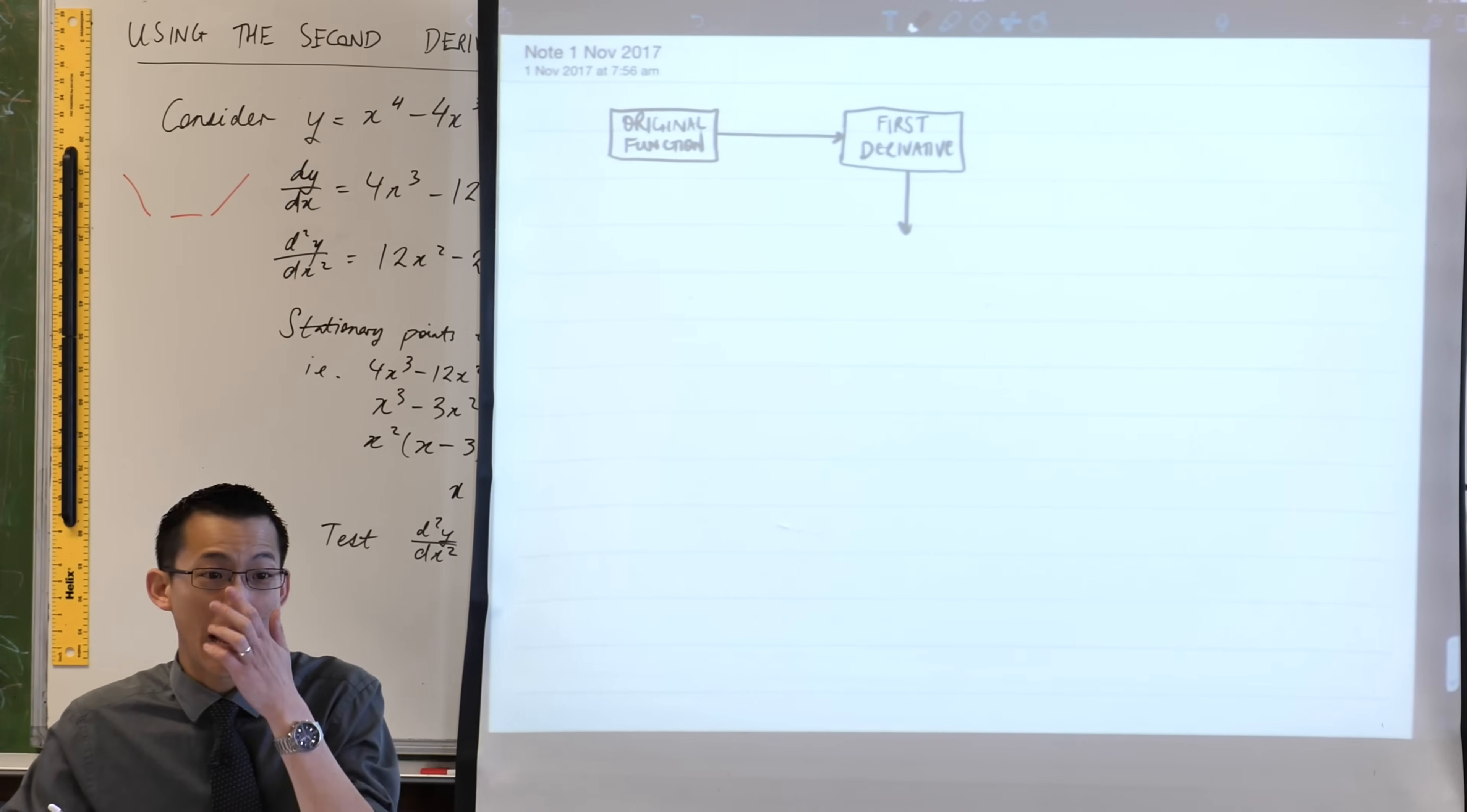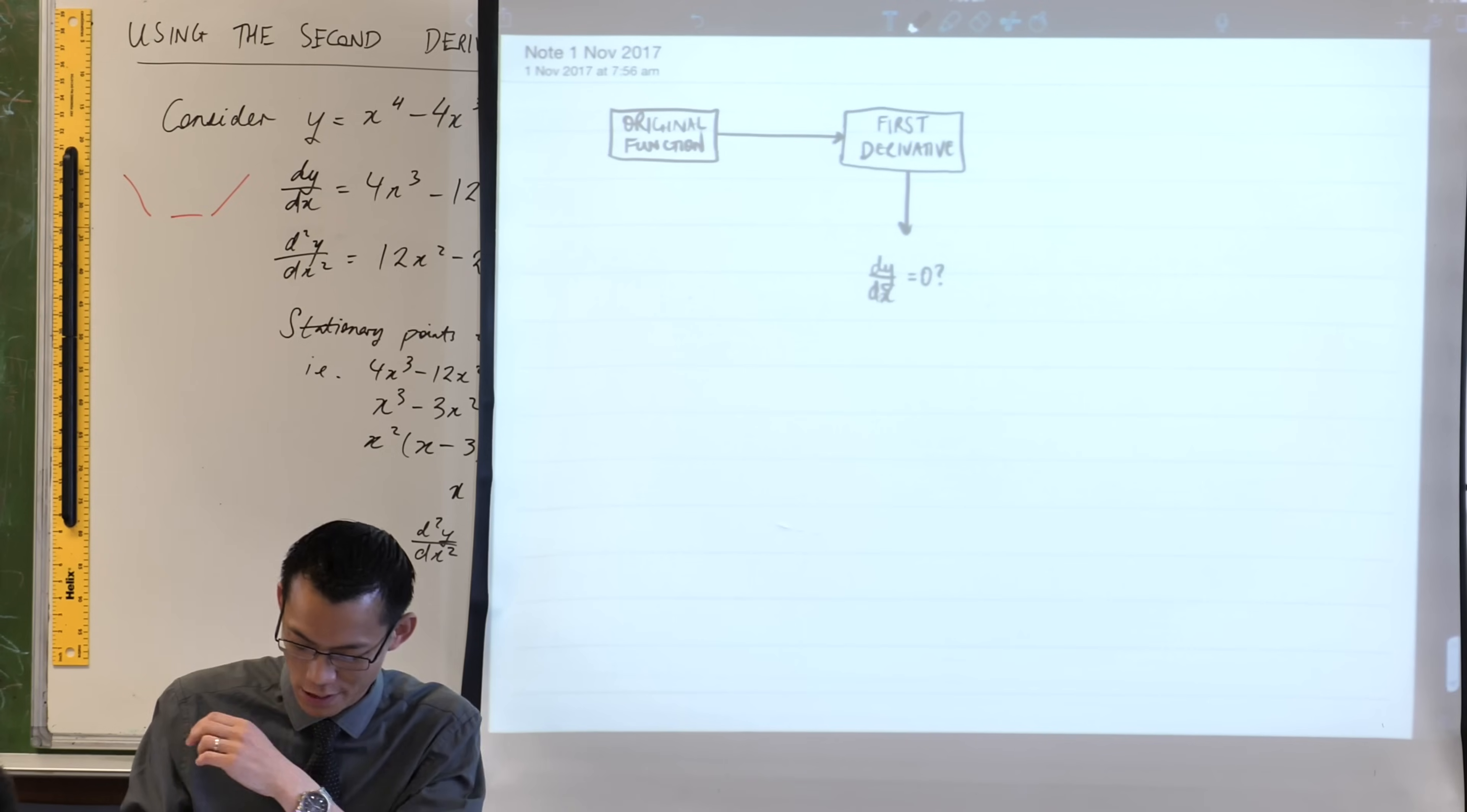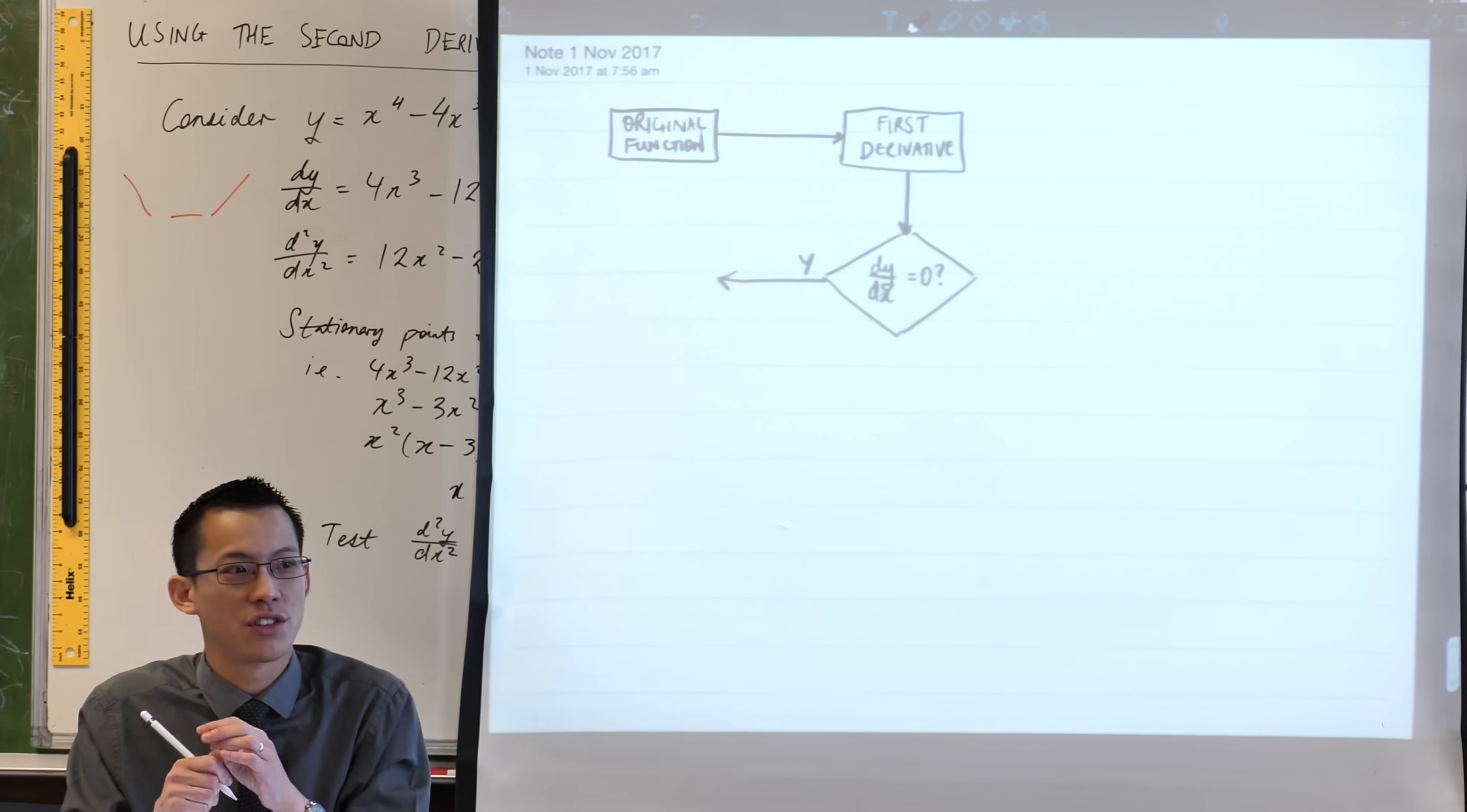But then as soon as this happens, what are we searching for on the stationary points? We're looking for the first derivative to be zero. Anyone who's constructed flowcharts before, for software design and that kind of thing, knows that when there is a choice of some kind, you do not use a rectangle, you use a diamond. I'm going to draw a little diamond here.